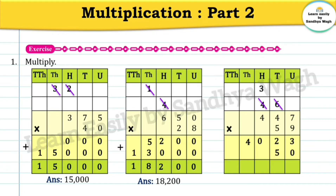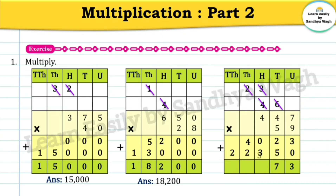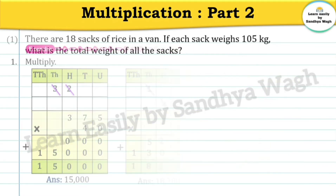Five sevens are 35, so we will write 5 in the tens place and 3 will go as a carry over. Five fours are 20, twenty plus three is 23, write 3 and carry 2. Five fours are 20, twenty plus two is 22. Adding: three plus zero is three; two plus five is seven; zero plus three is three; four plus two is six; and two. Our final answer is 26,373.